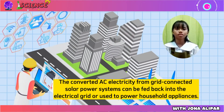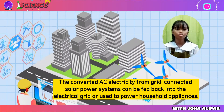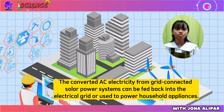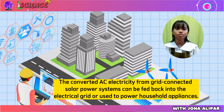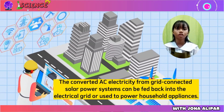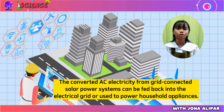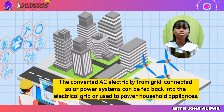The converted AC electricity from grid-connected solar power systems can be fed back into the electrical grid or used to power household appliances.